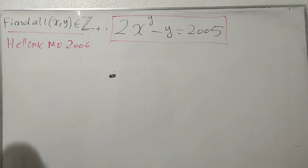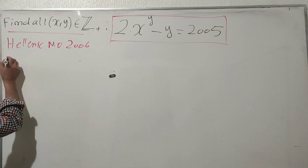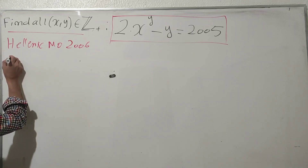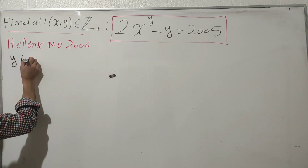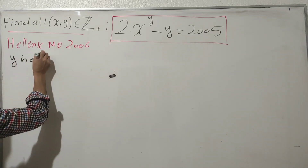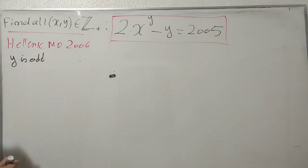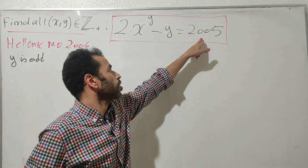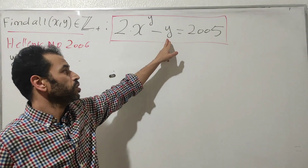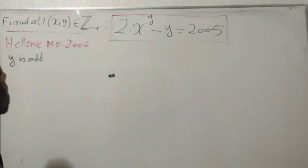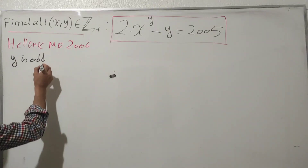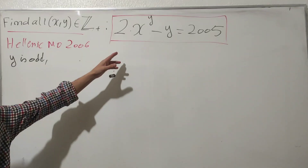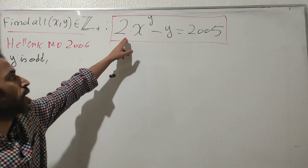Before we solve this problem, let's notice two important things. First, y must be odd — since 2005 is odd, and the term 2·x^y is even, the subtracted y must be odd. Now let's compare the two integers x and y.